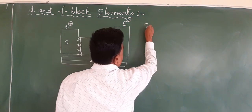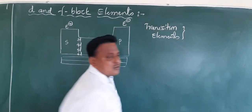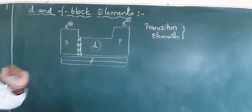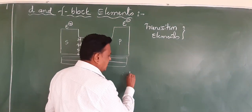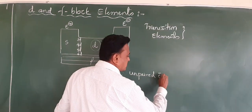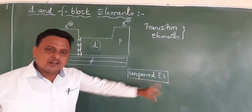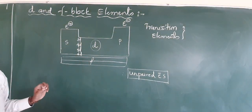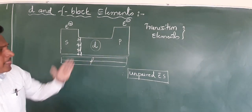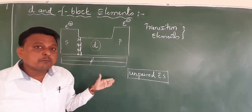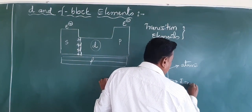The D block has another name — it is called transition elements. Why are they called transition elements? The whole topic depends on one key word: because D block elements have unpaired electrons. Because of unpaired electrons, 99% of questions about transition metals can be answered. D block elements are called transition elements because they contain a maximum number of unpaired electrons, available in either atomic form or ionic form.